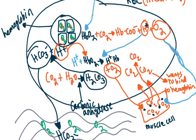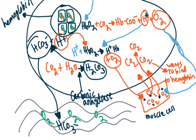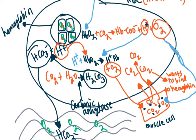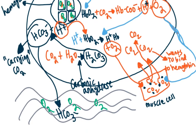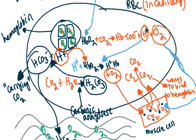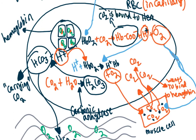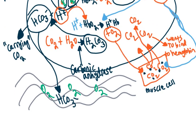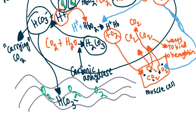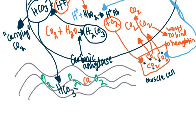Bicarbonate is the main way of carrying CO2 in the blood plasma — we'll see how that works when we get to the lungs in part two. The other main way is carbaminohemoglobin, where carbon dioxide is bound to hemoglobin and carried back to the lungs. A third way is that some CO2 can be dissolved directly in the plasma and carried back to the lungs.